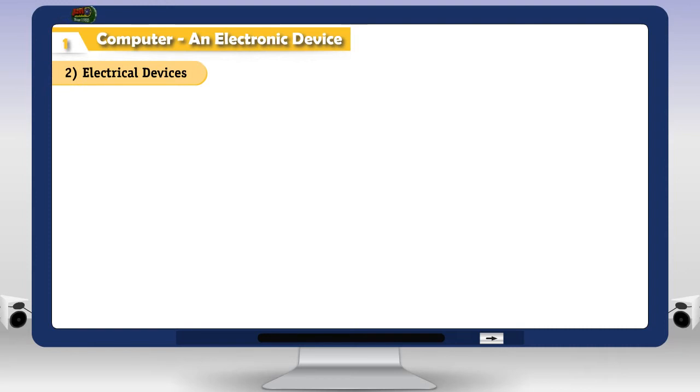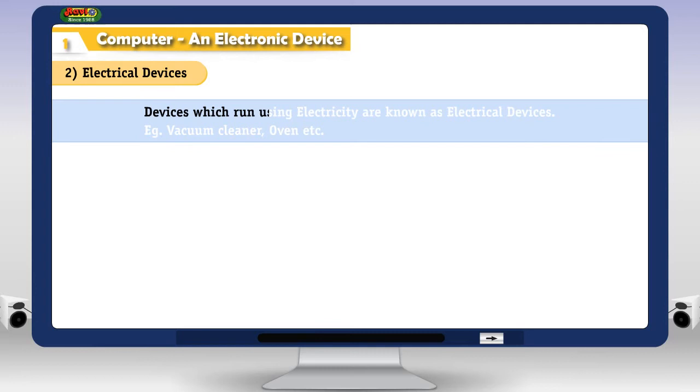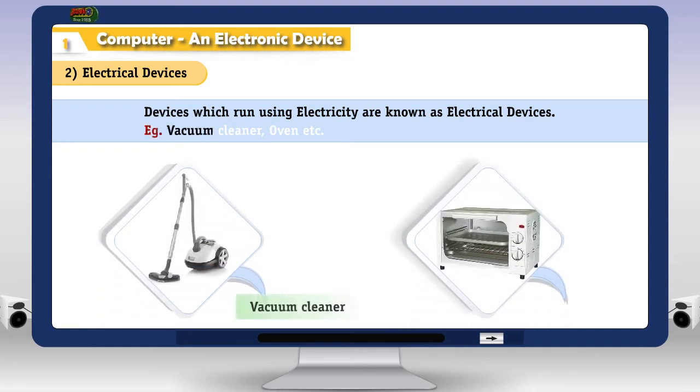Electrical devices. Devices which run using electricity are known as electrical devices. Example, vacuum cleaner, oven etc.